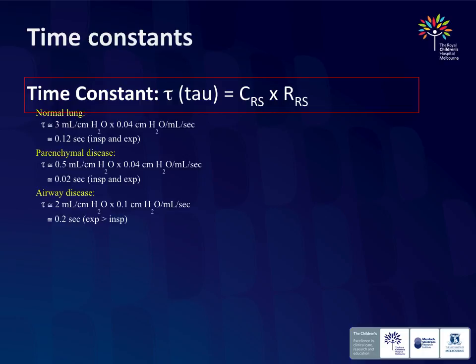These values are in standard textbooks. For compliance I use 1 ml/kg/cmH2O as a reference. Don't focus so much on the numbers — think about the physiology. Ask yourself: is it a problem of compliance or a problem of resistance? If compliance is low, you have a shorter time constant than normal. If resistance is high, you have a longer time constant.